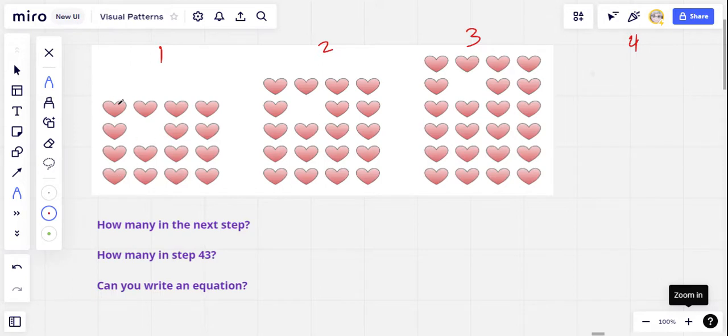So in this first one, I've got a four by four square of hearts with one missing, basically. So there are 15 there, right, because that'd be 16 minus one.